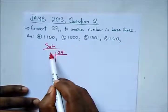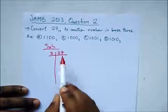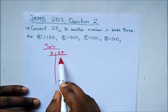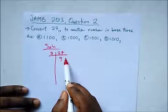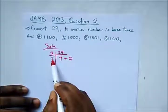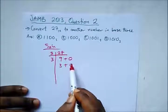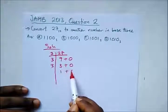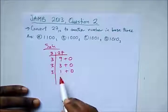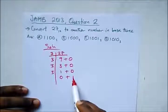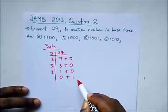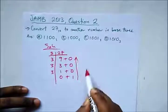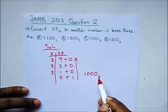3 into 27 gives us 9 times, remainder 0. 3 into 9 gives us 3, remainder 0. 3 into 3 gives us 1, remainder 0. And 3 into 1 can't go, so this is 0 and remainder 1. We take our answer in the reverse manner, so we have 1000 in base 3. Our correct option here is option B.